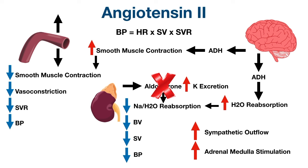Remember, aldosterone increases potassium excretion in the urine. With less aldosterone from ACE inhibitors, less potassium will be excreted in the urine, meaning more potassium remains in the bloodstream. This will become important when we talk about the side effects and contraindications of ACE inhibitors.